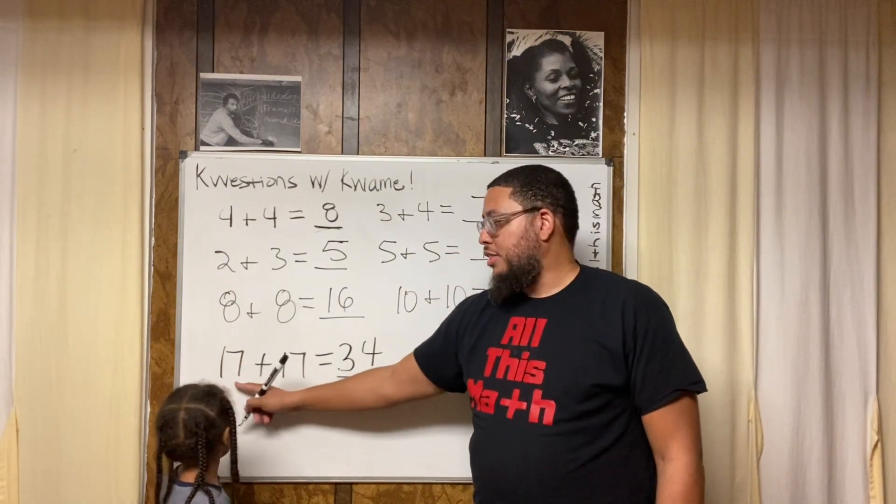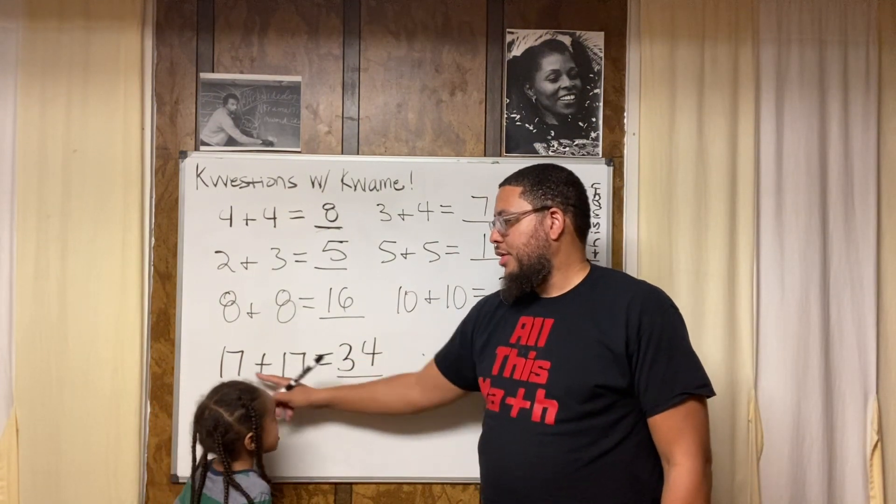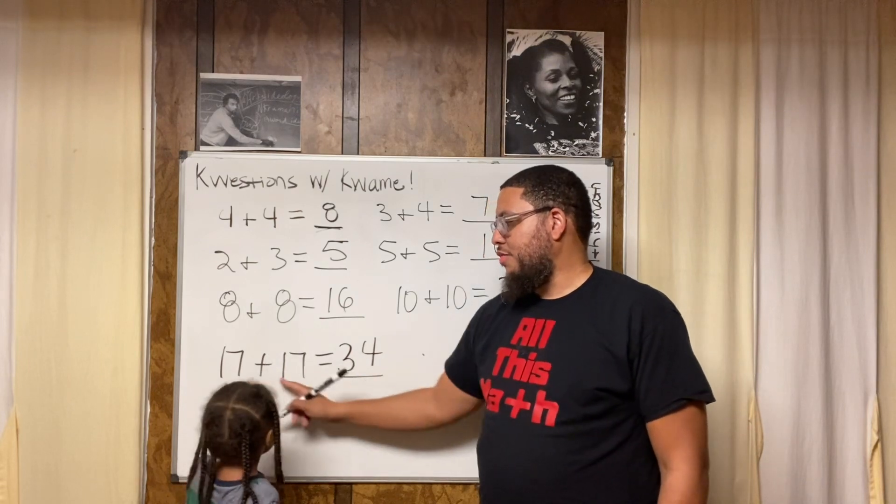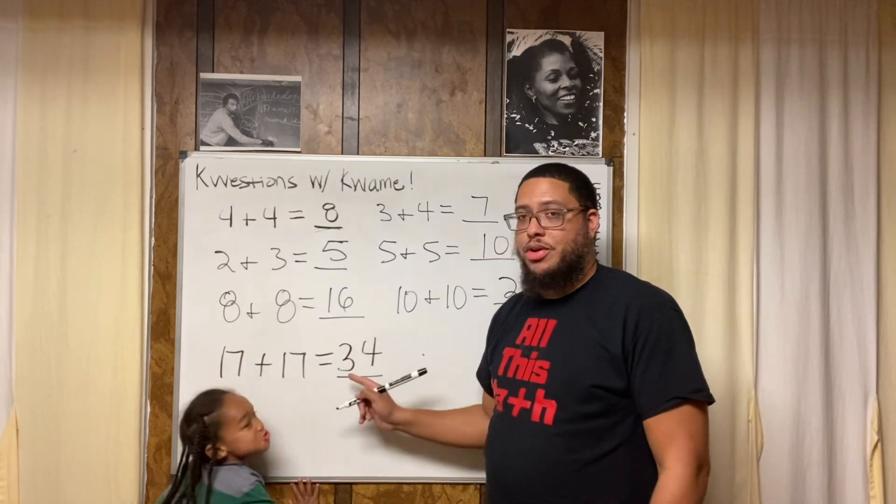You can think of it like doing ten and seven plus ten and seven. Ten and ten is twenty. Seven and seven is fourteen. Twenty and fourteen is thirty-four.